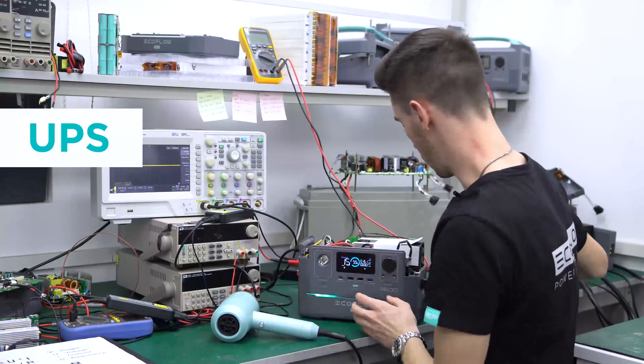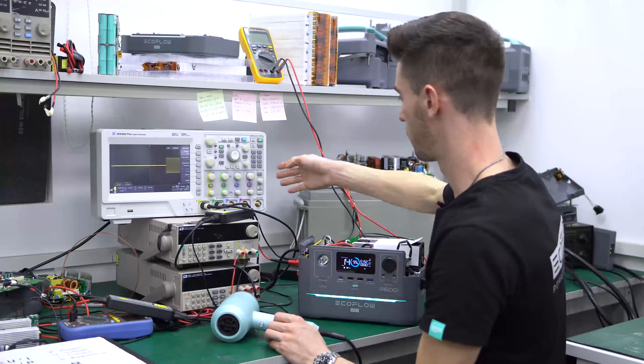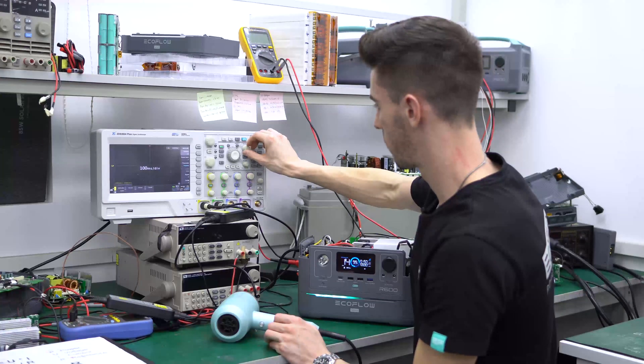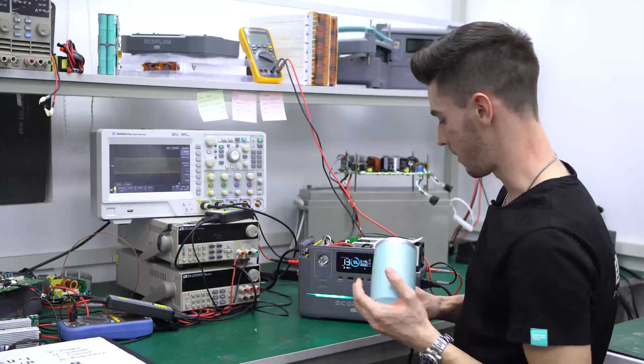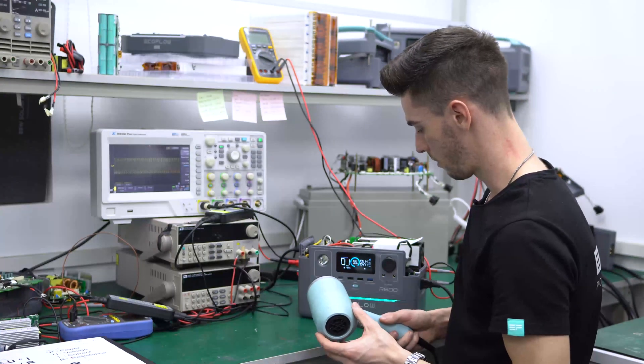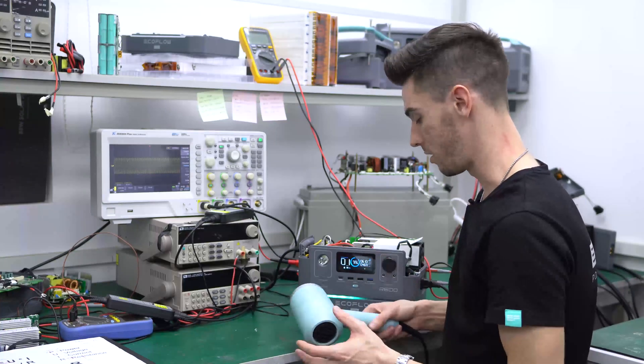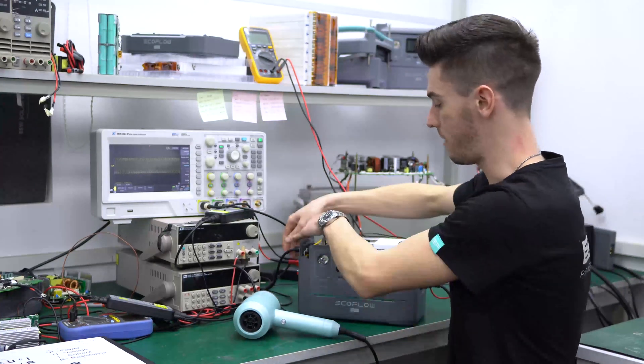So the way this works is we're going to turn the inverter on. Okay, so AC in, device on the other end. Running. We're at 470 watts again. What I'm going to do is disconnect the AC input.